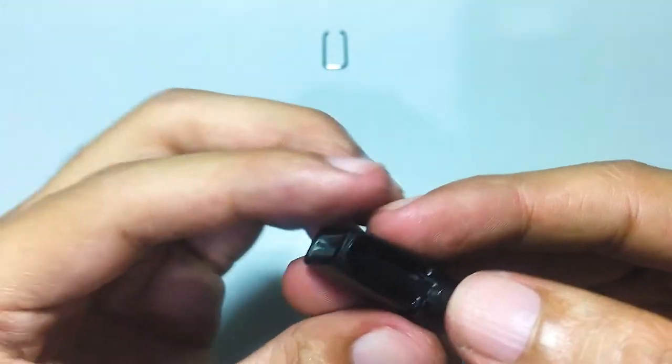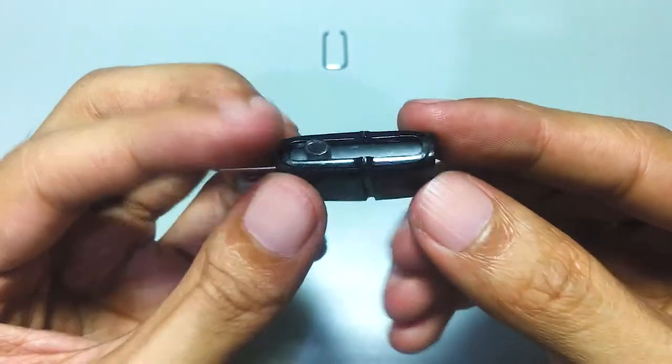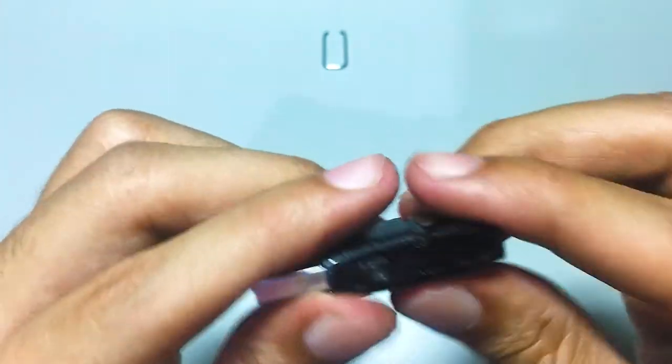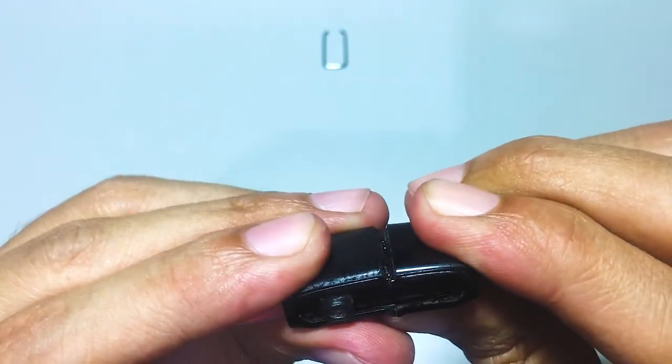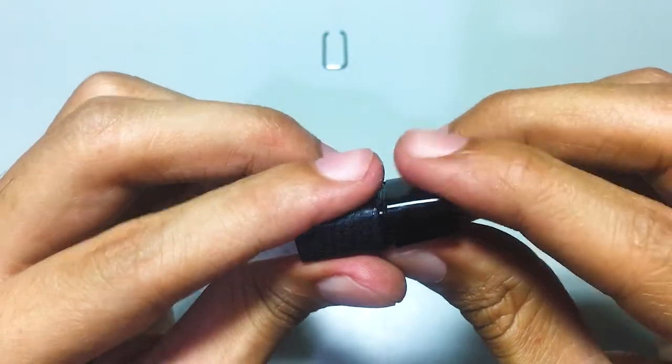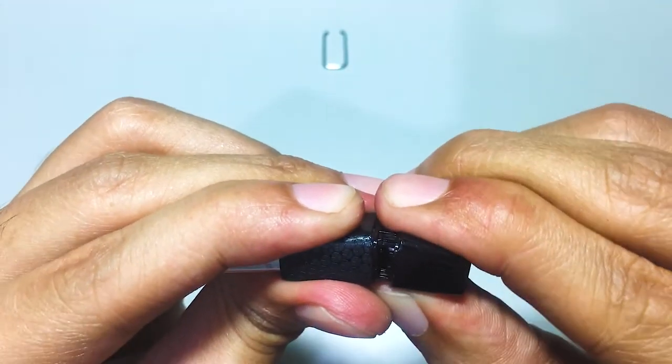As you can see, it's composed of two parts that we have to pull apart. Next, I slightly bent the body on both sides for it to loosen up. There we go.